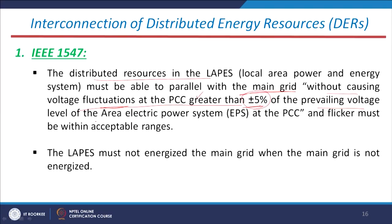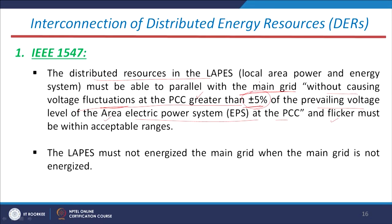The prevailing voltage level at the PCC and the flicker must be within acceptable limits. Flicker is a power quality issue — along with voltage sag, swell, and voltage interruption. The DERs must be connected in such a manner that they do not create flickering at the PCC bus, and voltage fluctuations must not exceed plus or minus 5 percent of the nominal value at the PCC bus, which is the connection point where DERs are interconnected with the main grid.